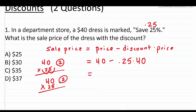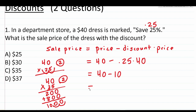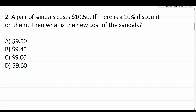To work out 40 times 0.25 without decimals, we shift the decimal two places right to get 40 times 25. That gives us 1,000, and shifting two decimal places back gives us 10. So 25% of $40 is $10. Therefore 40 minus 10 equals $30. This dress which costs $40 with a 25% discount will cost $30 with that discount applied.